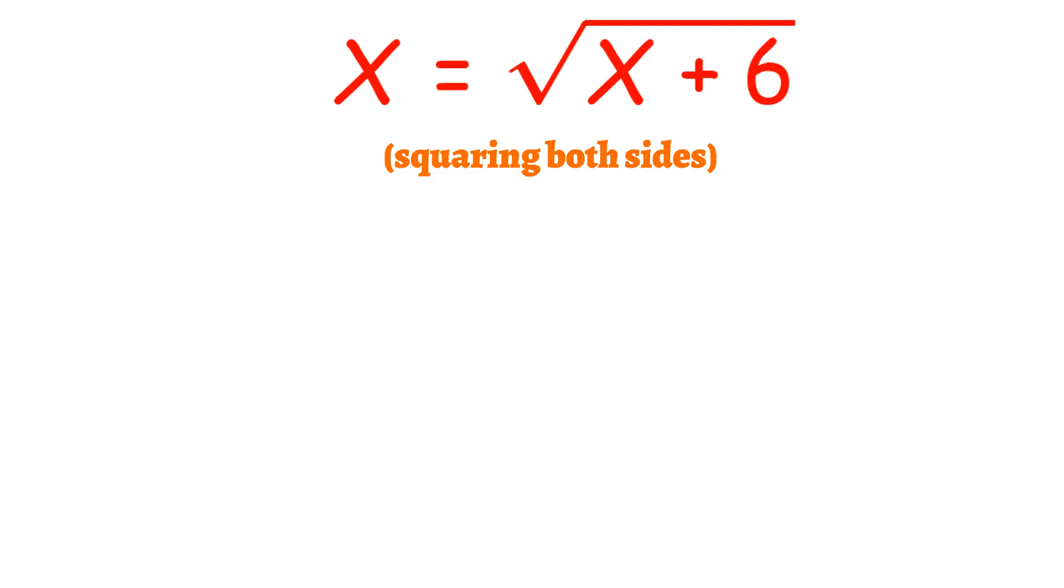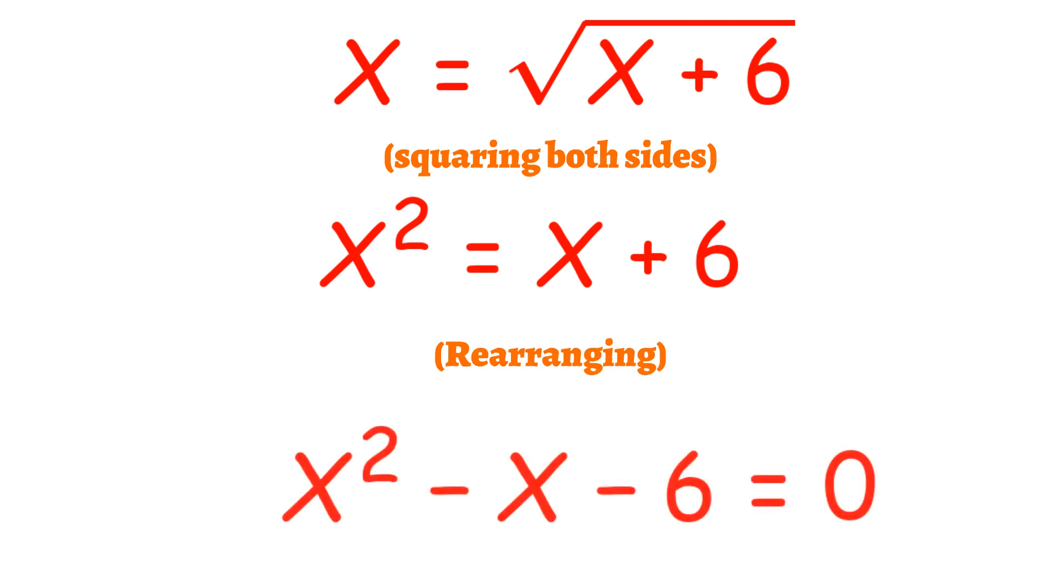Squaring both sides, we get x squared equals x plus 6. Rearranging to make this into a manageable quadratic, we get the expression x squared minus x minus 6 equals 0.